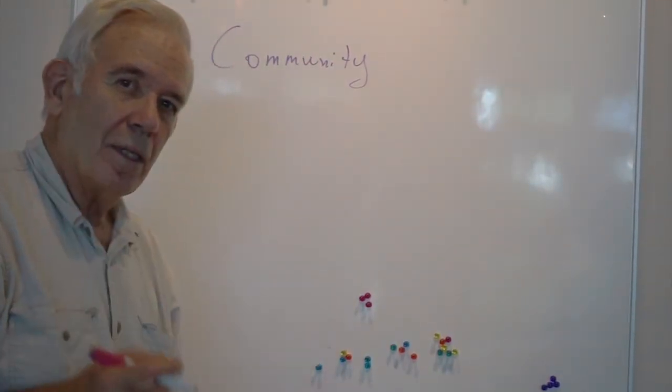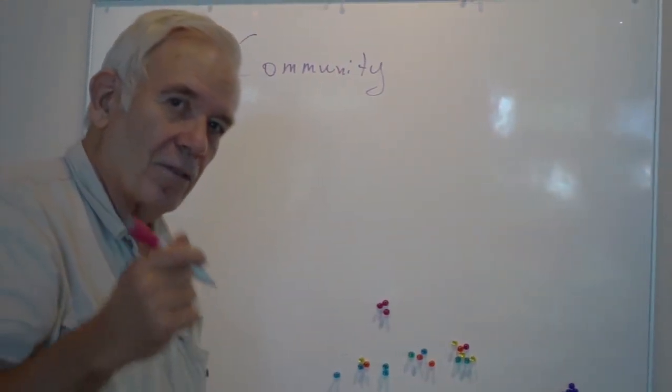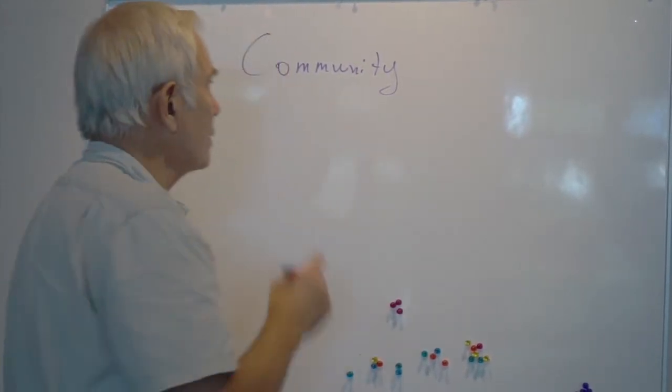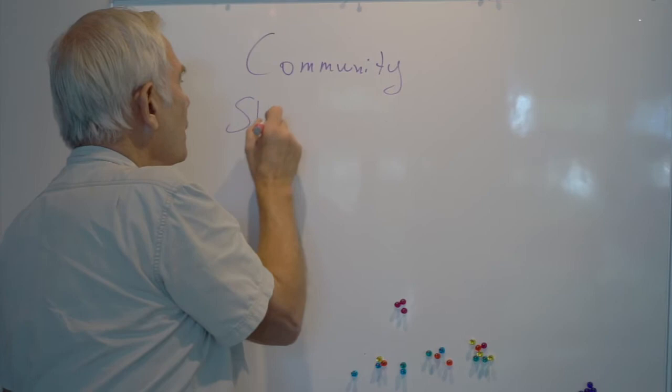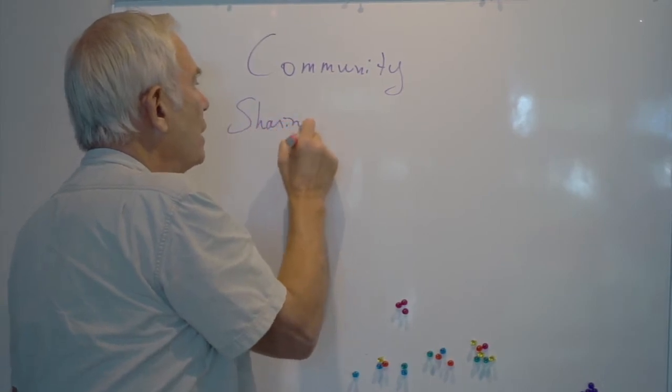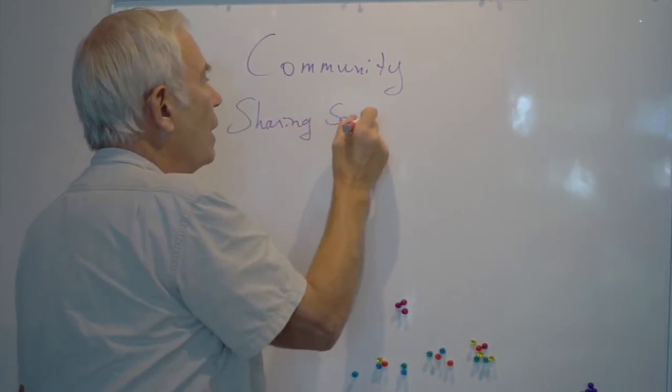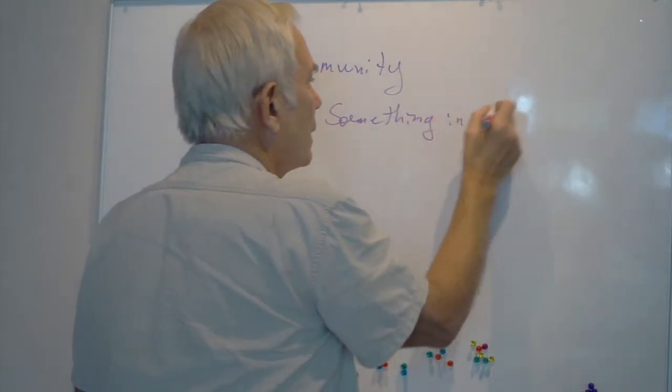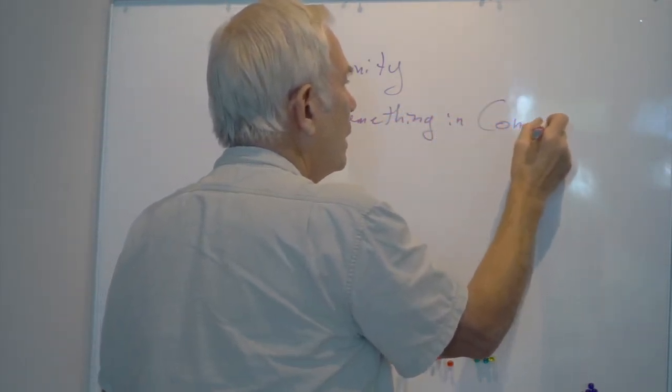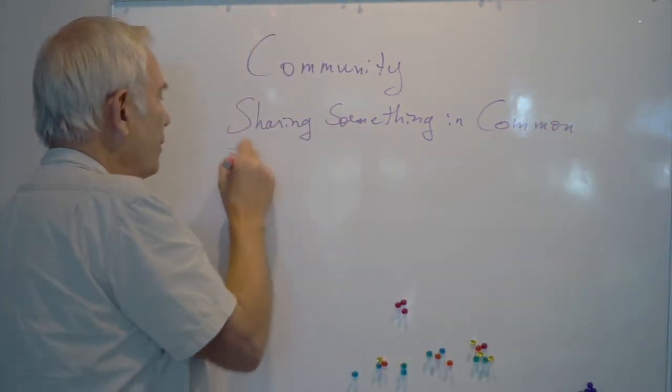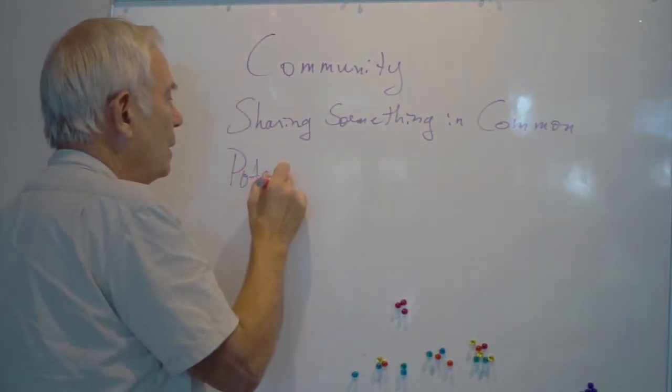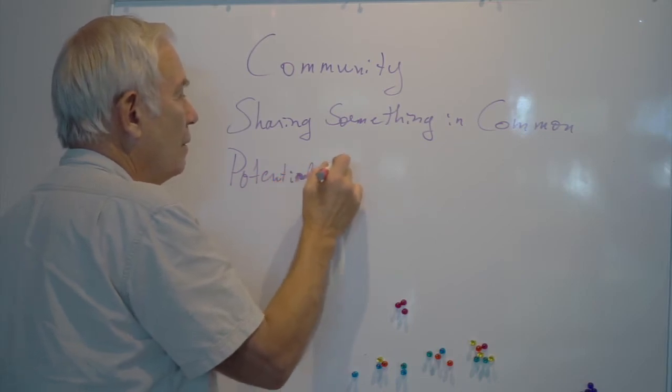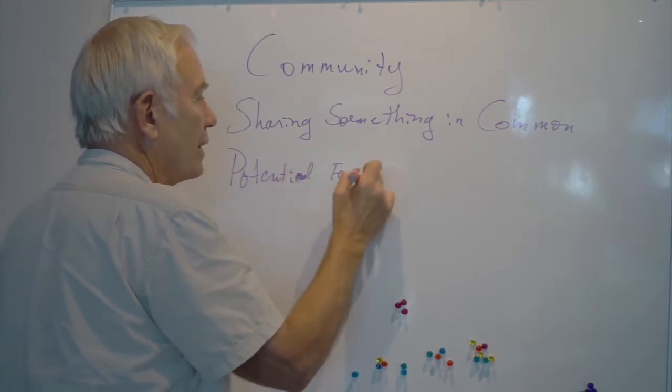And community in seed scale is described by functions, by two functions: sharing something in common and the potential for acting together.